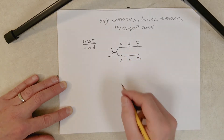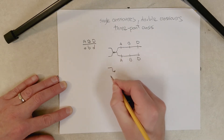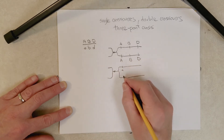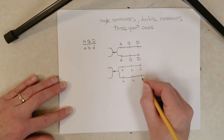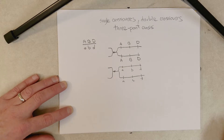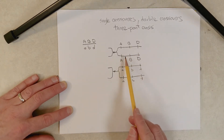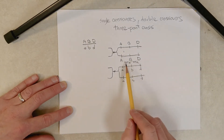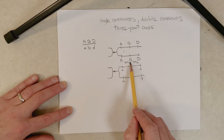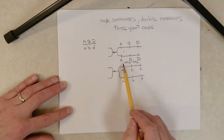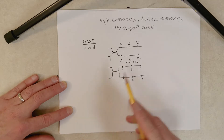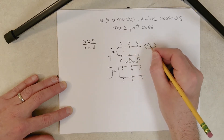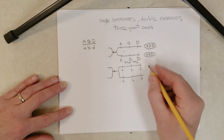The big dominant alleles go on top, and I'll diagram the other chromosome down here with little a, little b, and little d. Now, if a single crossover was going to happen, it could happen between what we call interval one — right here between genes A and B — or interval two, between B and D. If no crossover happened between any of these genes — say it happens somewhere else — we would call the gametes that came from this tetrad non-crossover gametes with respect to these three genes.